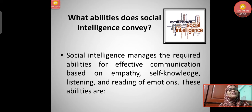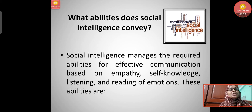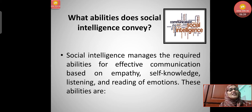Social intelligence manages the required abilities for effective communication based on empathy, self-knowledge, listening, and reading of emotions. Empathy means thinking about others' feelings — putting ourselves in their shoes. Self-knowledge means having knowledge about ourselves. Listening to others and reading their emotions — knowing how people will react — helps us speak politely and gently so that others are not hurt.